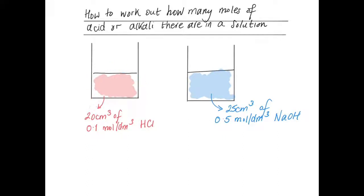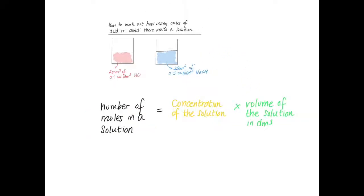I'm going to work out how many moles of hydrochloric acid there are in this beaker and how many moles of sodium hydroxide there are in this beaker. The formula that you need is: the number of moles in the solution, which is usually called n, is equal to the concentration of the solution c times the volume of the solution v.